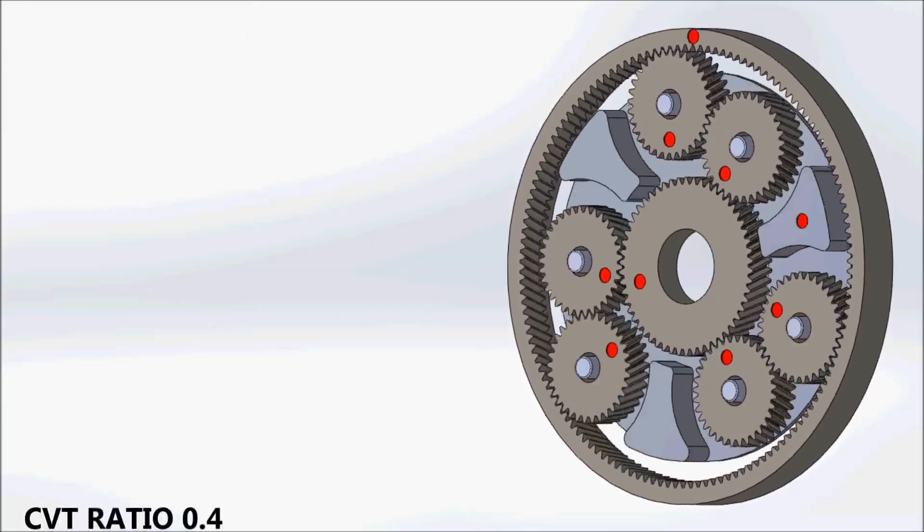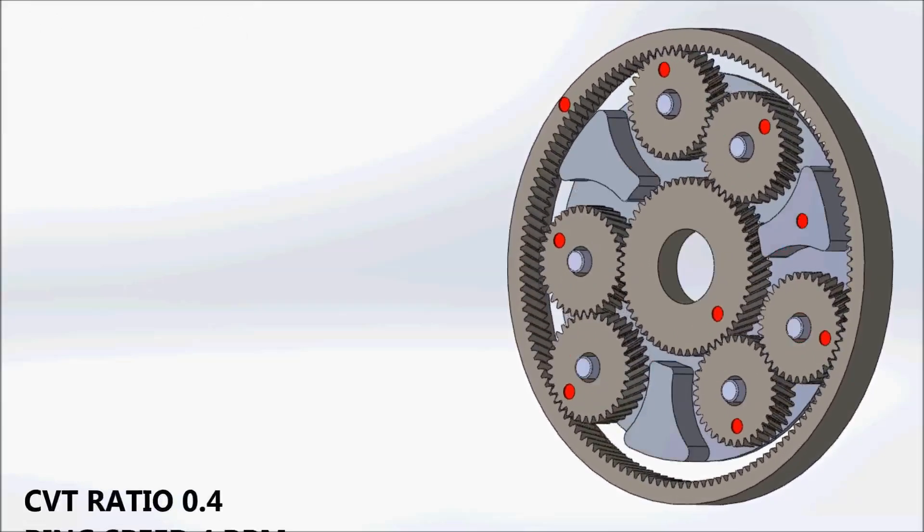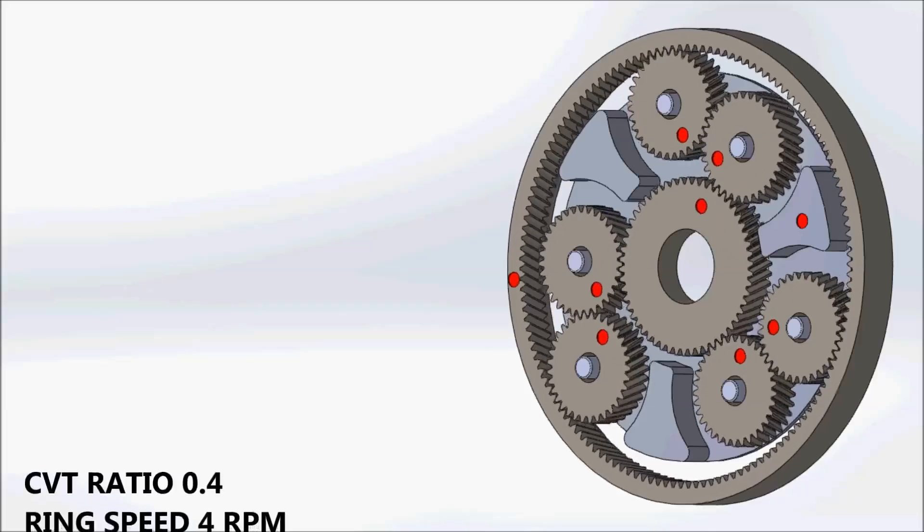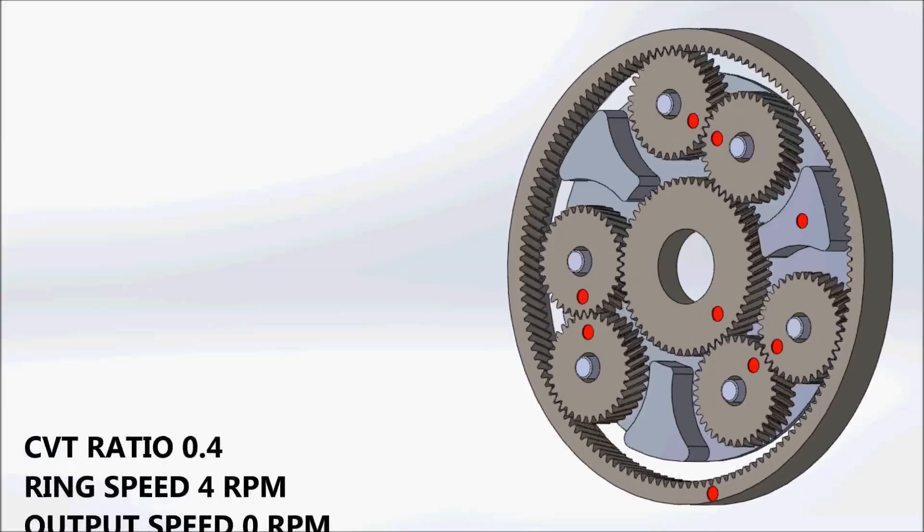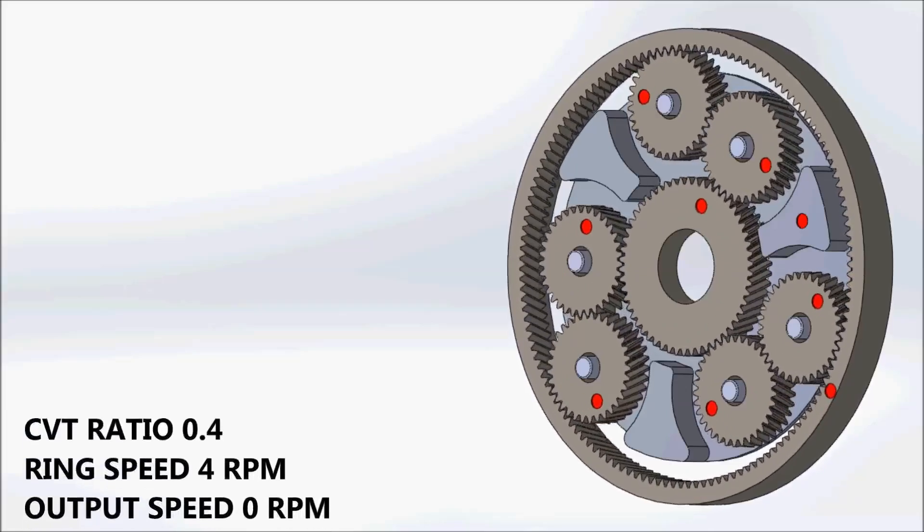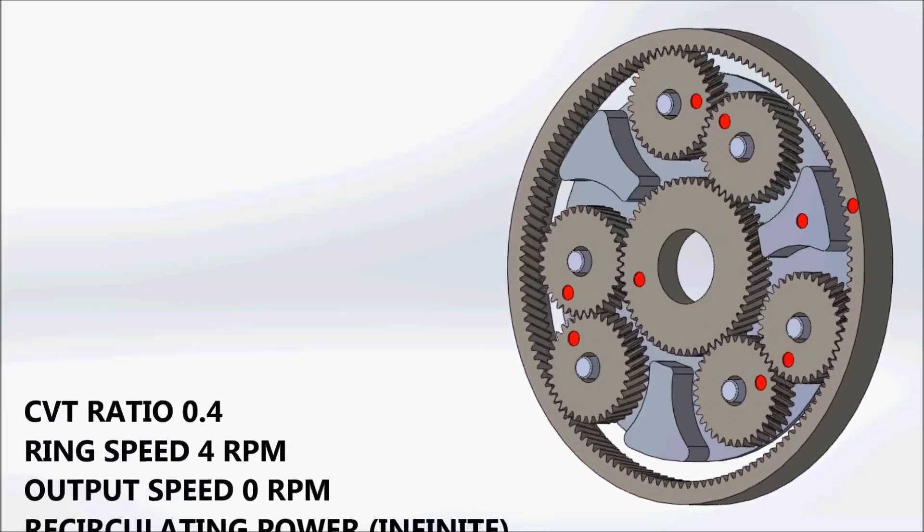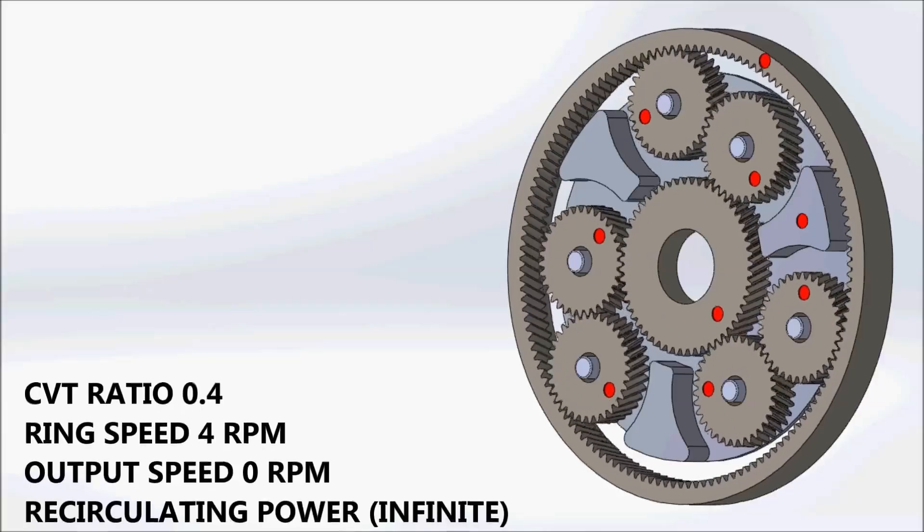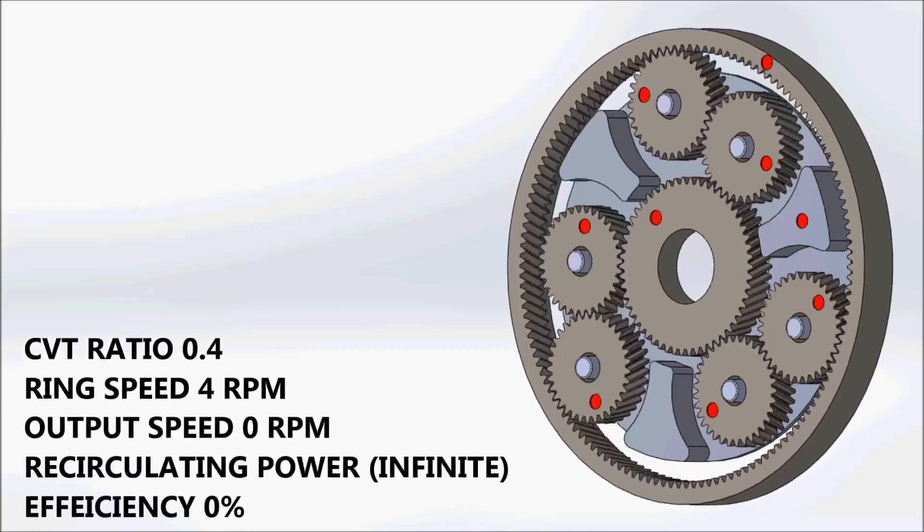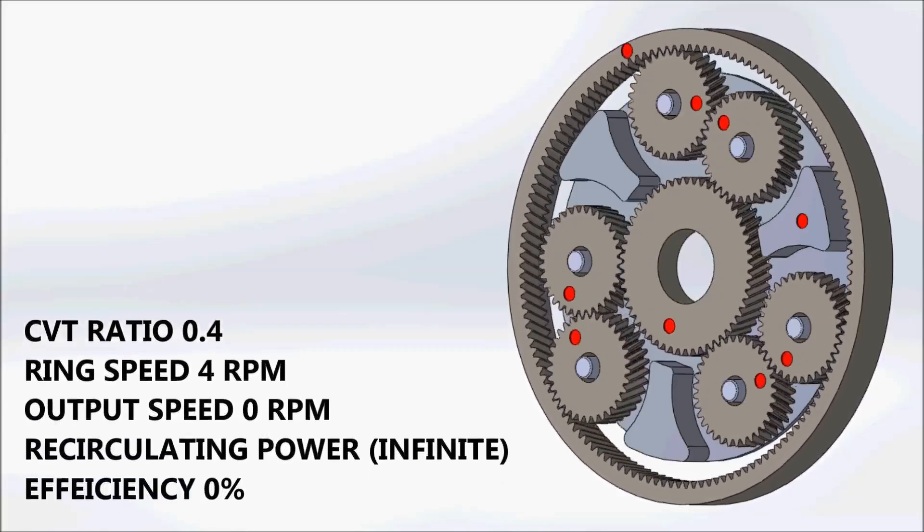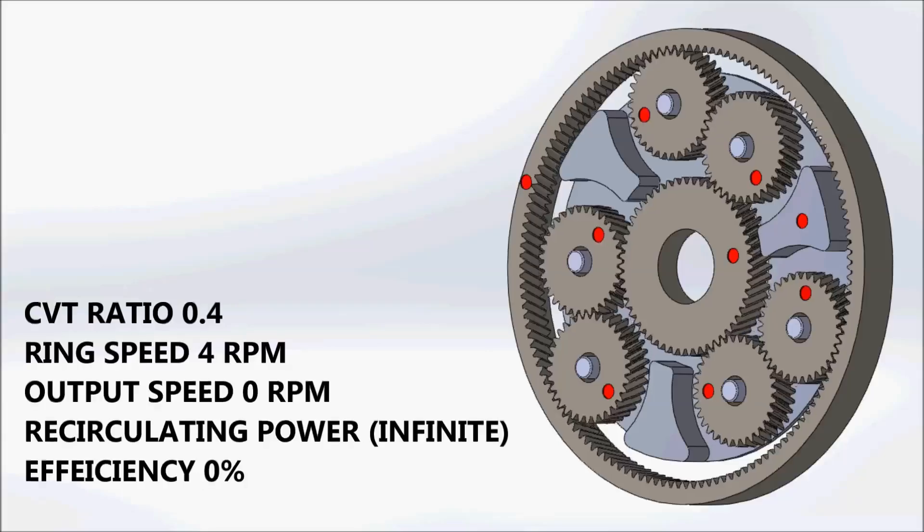When the CVT ratio is 0.4, and again without varying the speed of the sun, the planet carrier becomes stationary, regardless of the input speed. The vehicle is now in what is often called geared neutral. The wheels are connected to the engine but are not rotating.